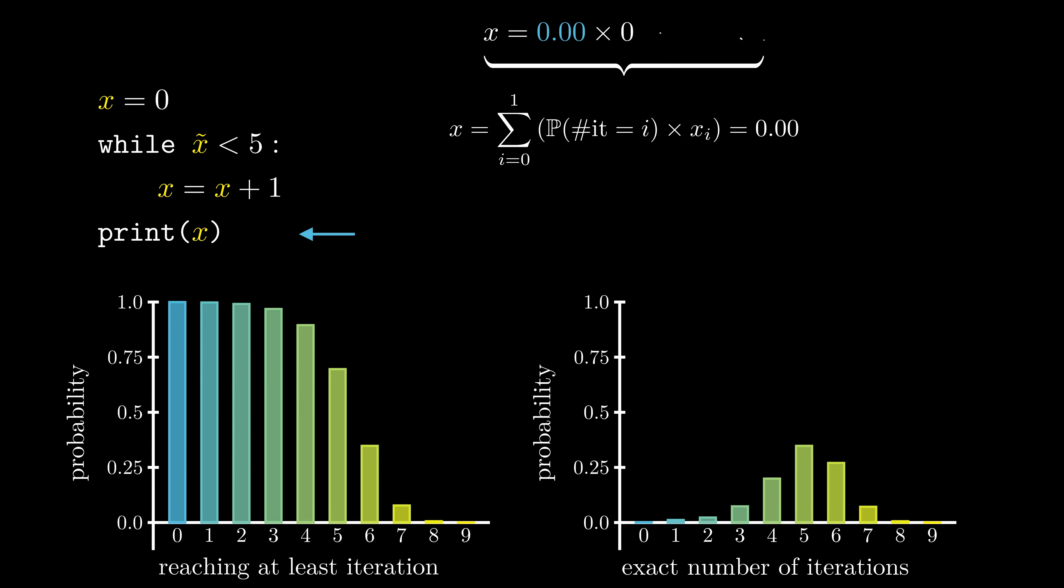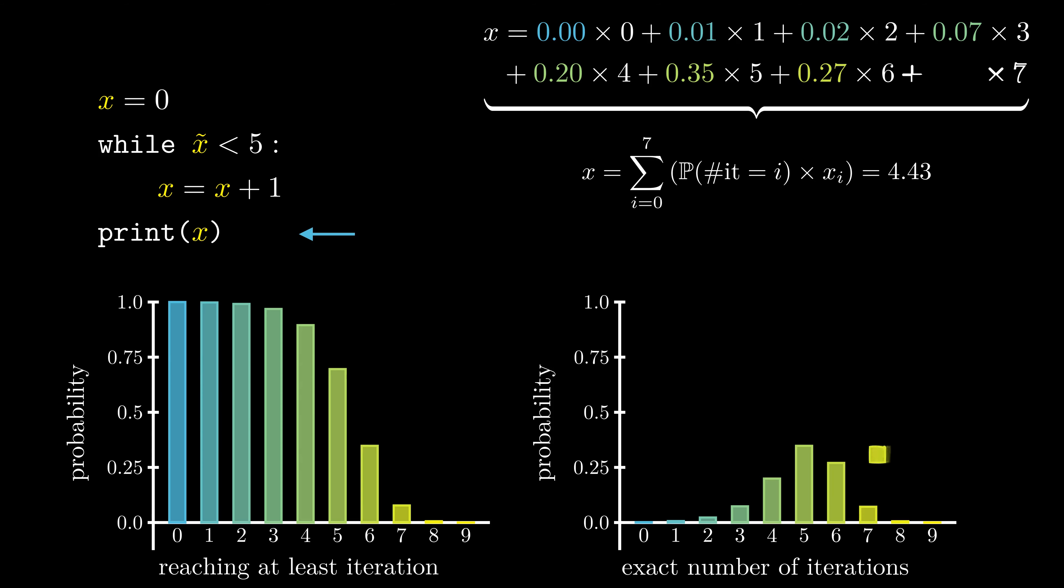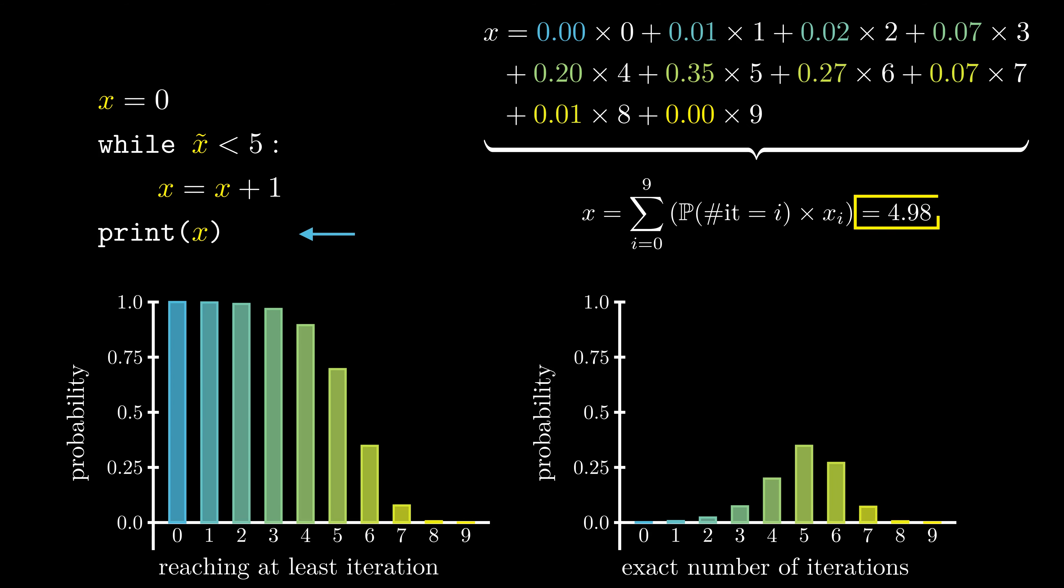While we weighted some of the outcomes of the loop traversals, weighted by the respective probabilities, we can compute the expectation value of x after the loop, and come to the result that x is 4.98. This can also be done with more complex loop bodies, but in every case, we only need to keep track of the states after each loop traversal, and combine them via a convex combination.